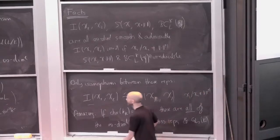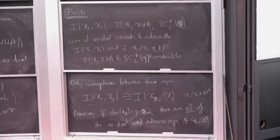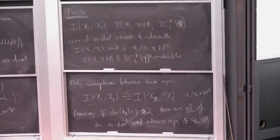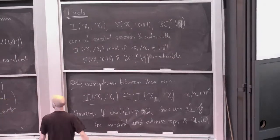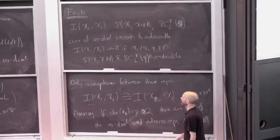Here's an amazing thing: if p is bigger than two — if the characteristic of the residue field is bigger than two — that's all of them. These are all the infinite-dimensional irreducible admissible representations of GL₂(K). That's hard work involving some counting, and it doesn't work when p equals two — if p is two, there are a few extra ones called exceptional representations.